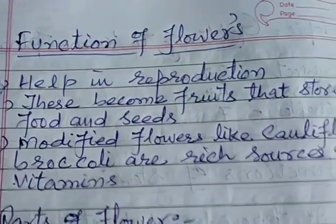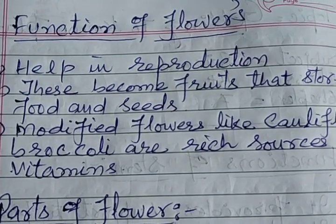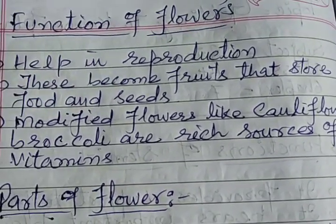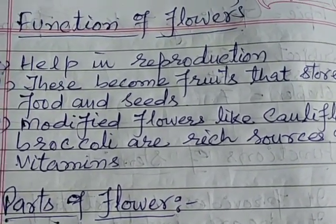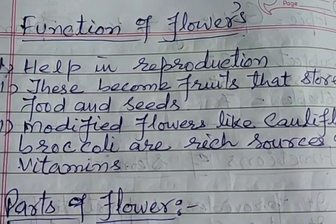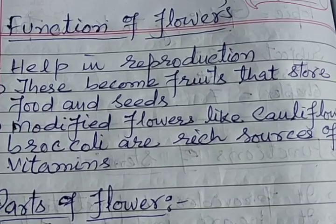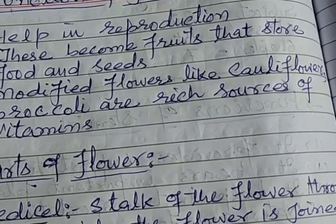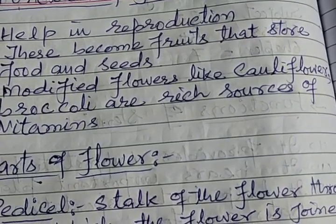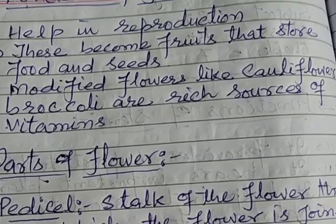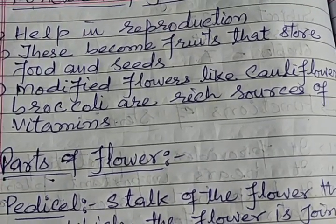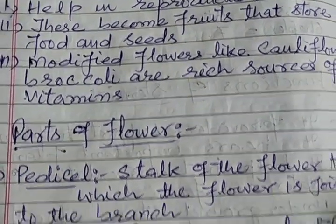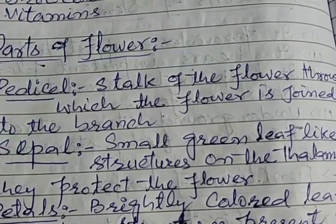Now the function of flowers: flowers help in reproduction. Plants use flowers for reproduction. Flowers become fruits that store food and seeds. Modified flowers like cauliflower and broccoli are resources of vitamins.